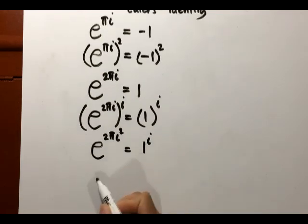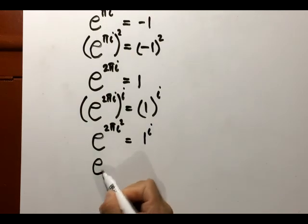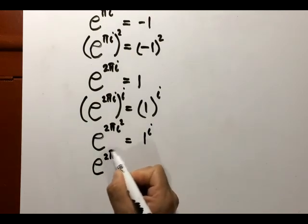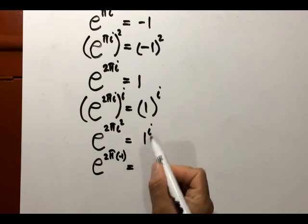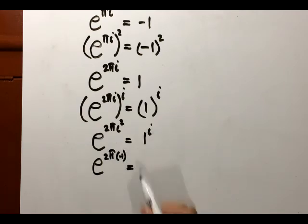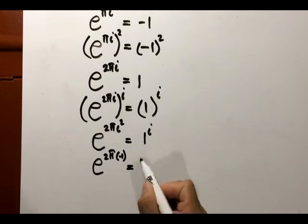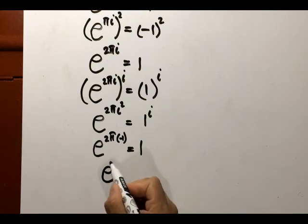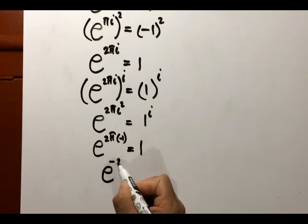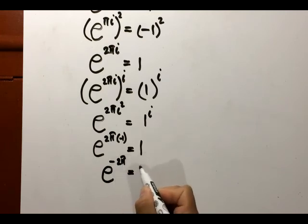Now we know that i squared is negative one, and whatever is the power of one, because that is one, that's one. So e to the power of negative 2π is one. End of the proof.